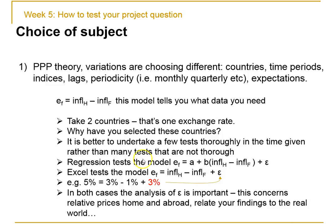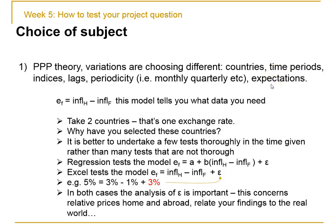PPP is a very common area for projects. You need to get the exchange rate, you need to get the two inflation rates, you need to say where your data has come from, why you've selected the countries, and why you've chosen those time periods. The reason for time periods can simply be: I selected all the time periods available on the database — that's a perfectly good reason. When in doubt, just be honest. There's nothing better.